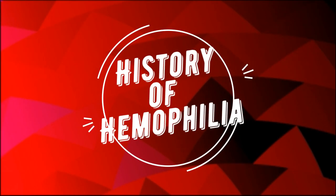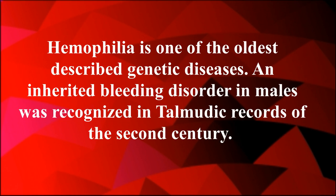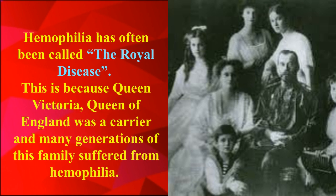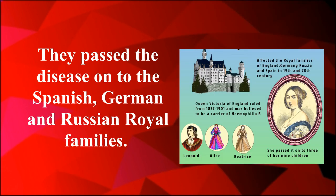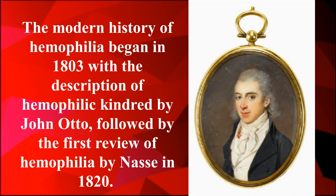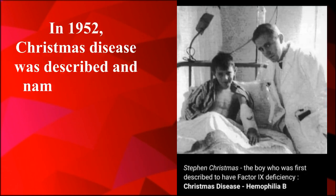Hemophilia is one of the oldest described genetic diseases. An inherited bleeding disorder in males was recognized in Talmudic records of the second century. Hemophilia has often been called the royal disease because Queen Victoria of England was a carrier, and many generations of her family suffered from hemophilia, passing the disease on to the Spanish, German, and Russian royal families. The modern history of hemophilia began in 1803 with the description of hemophilic kindred by John Otto, followed by the first review of hemophilia by Nasse in 1820.